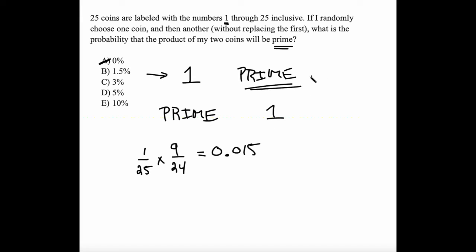But we're not done, remember? So here's situation 1 where it could happen. It could also happen this way. But when we write this out, this time I have 9 numbers out of 25. Remember, 1 is not a prime number. And then the probability of drawing the second one, 1 over 24, I end up with the same thing, 0.015 or 1.5%.